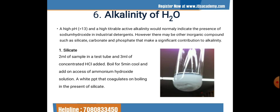For detection of silicate, add 2 ml of sample in a test tube and add 3 ml of concentrated HCl. Boil for 5 minutes, cool, and add an excess of ammonium hydroxide solution. If a white precipitate coagulates on boiling, it confirms the presence of silicate. If no precipitate appears in the test tube on boiling, it shows a negative test for silicate.